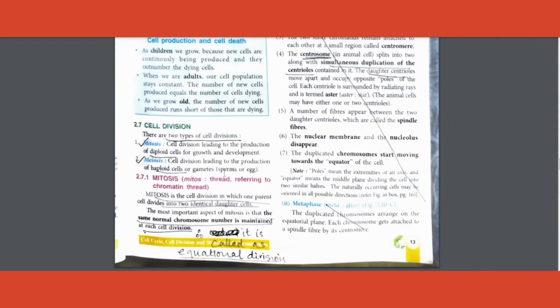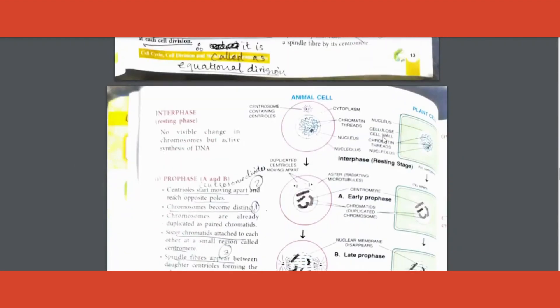Coming to mitosis, question is why is it called equational division? Important two mark question. It's because in the daughter cells formed, the number of chromosomes remain same. That is why it's called equational division. Write it as such.